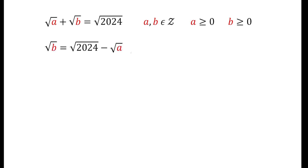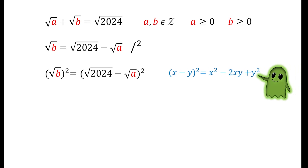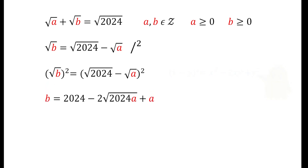From here we will square our equation. We develop the right side using the square of a binomial, which states that (x − y)² = x² − 2xy + y². Applying this to the right side of our equation gives us the following.